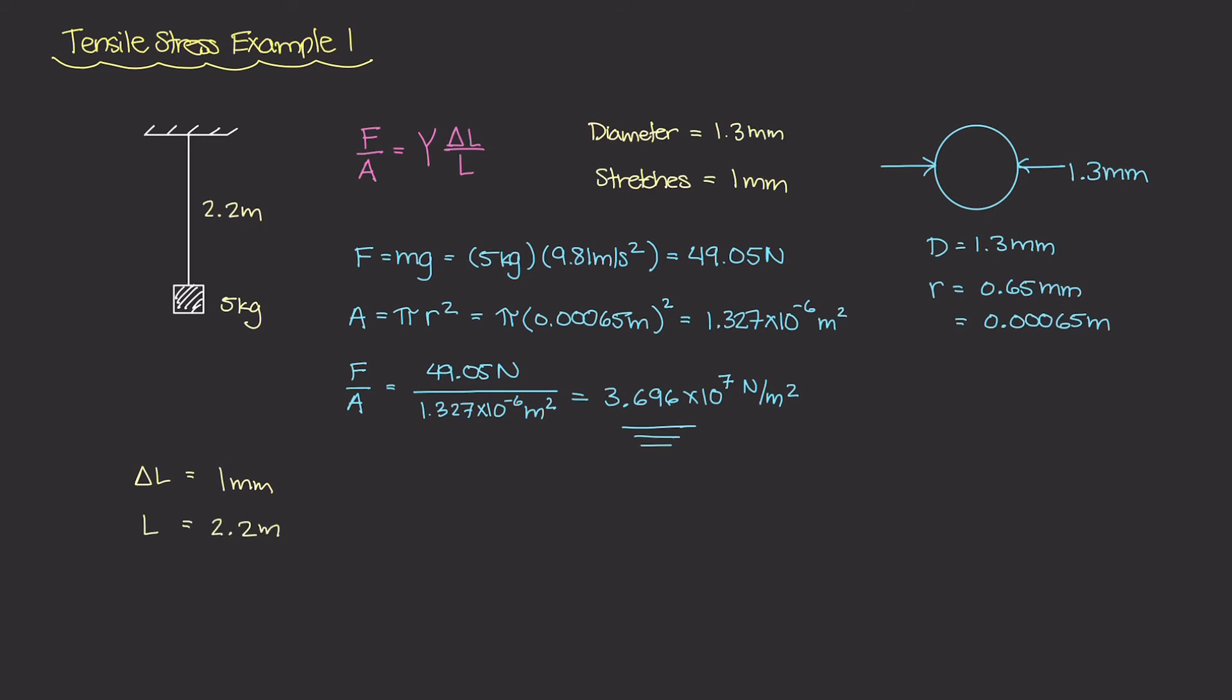So the strain is going to be ΔL over L, which is going to be 1 millimeter divided by 2.2 meters. Now remember, because this ratio of ΔL over L is unitless, you can either convert millimeters into meters or convert this meter into millimeters. Either one will work. You'll get the same exact strain value.